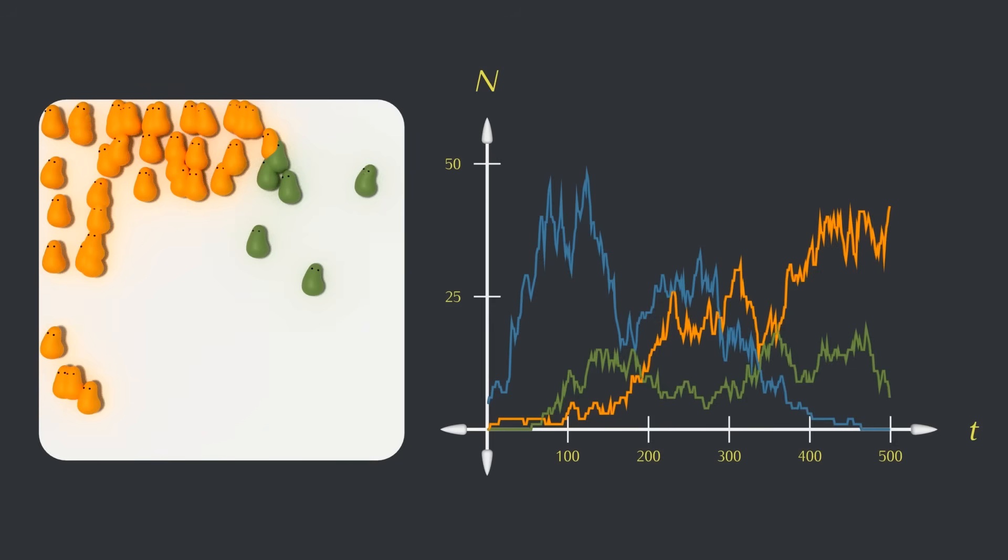One surprising thing in this simulation is that green is doing better than blue after 500 timesteps. You wouldn't expect that since it has the worst stats of all the creatures, but this is a good example of how luck is a big part of evolving systems. The most likely outcome doesn't always happen.